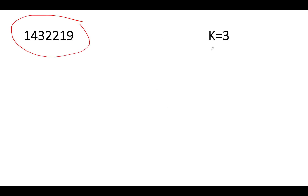Let's try and understand the question. We are given a string that represents a number and we are given a value of k. Let's go step by step. First, let's assume the value of k is 1. The brute force approach is to remove one digit at a time from this string and generate all possible numbers, then pick the least one.